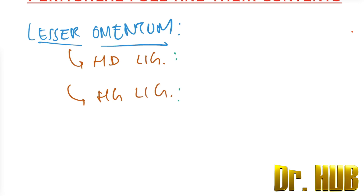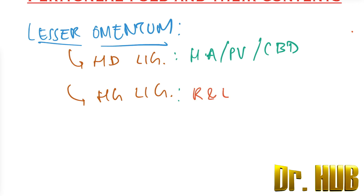Now let's look at the contents of each. The hepatoduodenal ligament contains the hepatic artery, the portal vein, and the CBD — that is the common bile duct. The hepatogastric ligament includes the right and the left gastric vessels.